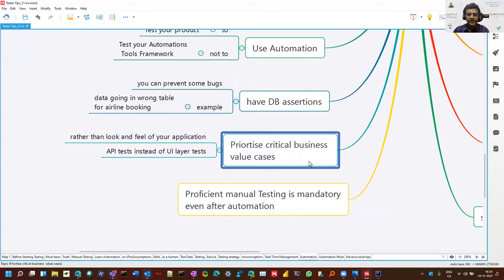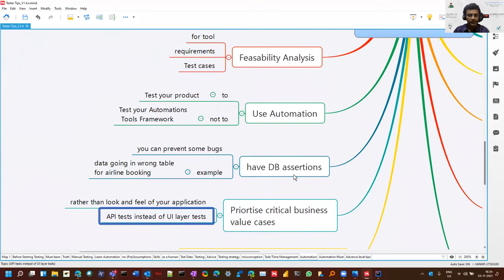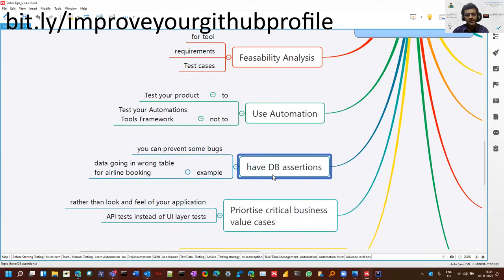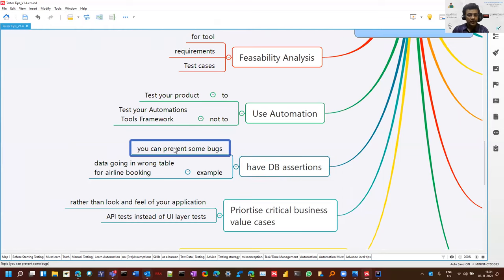You can prioritize critical business value cases. Suppose there are 100 cases, it's not that you have to pick all of them. You can first pick the API layer, do it because it's more stable compared to UI. And you can even have with your automation, sometimes the focus, we see that most of the people are focusing on Selenium, the front end of it. You can have DB assertions, you can just write script, write some SQL commands, some stored procedures by which you can validate the database if the entries are going right. You can prevent some bugs. Somebody has shared the example in that book that in airline booking they found that the data was going in the wrong table. Doing UI things would seem good, but we can do automation at this level as well.